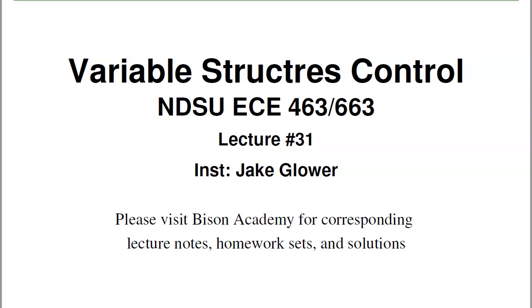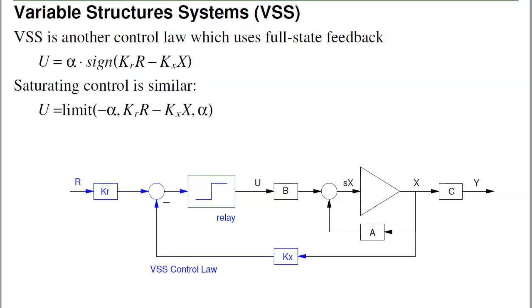Welcome to lecture number 31 in ECE 463/663 Modern Control: Variable Structure Systems, also known as Bang-Bang Control. Variable structure systems are very similar to full state feedback, where I have a system x dot equals ax plus bu, feeding back all the states times the feedback gain kx, and an input gain kr. The difference is I have this relay function. This is sort of how anti-lock brakes work in cars — when you slam on the brakes on ice, you can hear the brakes chattering. This relay is a type of chattering, or bang-bang control, also known as Variable Structure Systems.